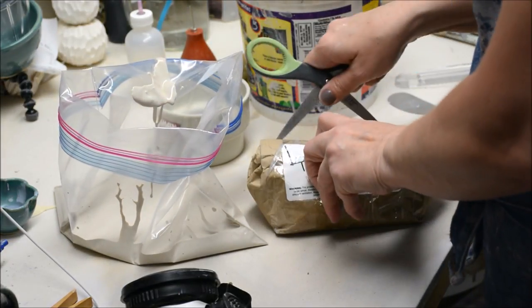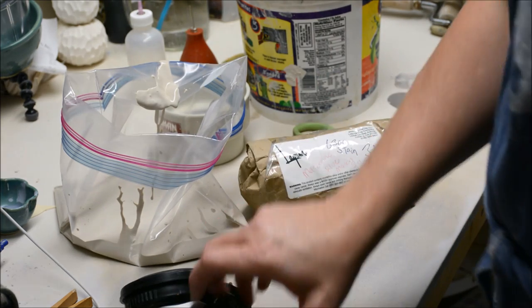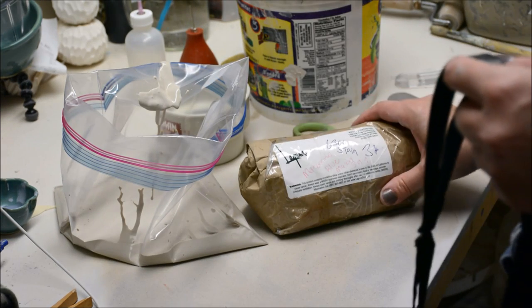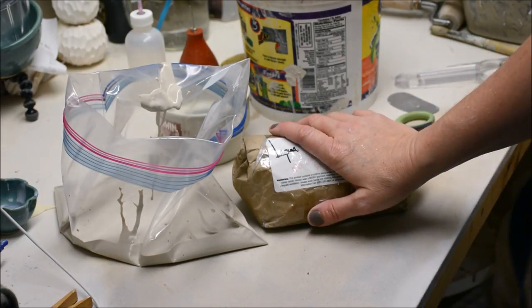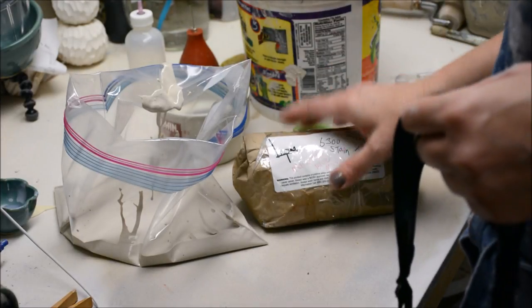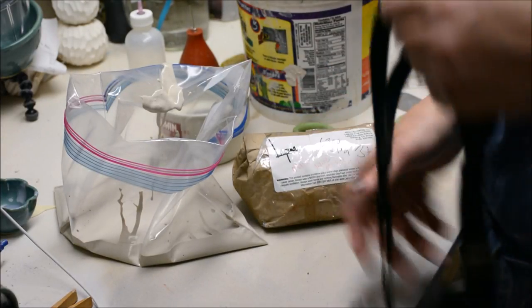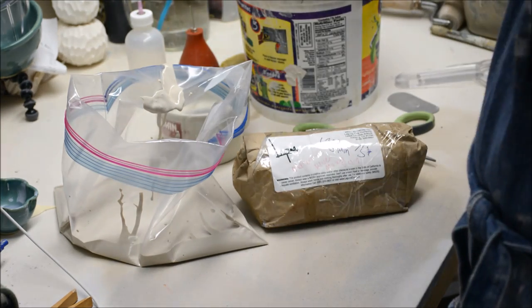When you're dealing with dry mason stains, you have to treat it just like you would a glaze or a clay body. It's going to have microcrystalline silica. You don't want to breathe it in. Don't do it in a super drafty area. I turned my fan off here in my studio, and I am going to be using a respirator when I mix this. You just don't want to breathe in the dust.